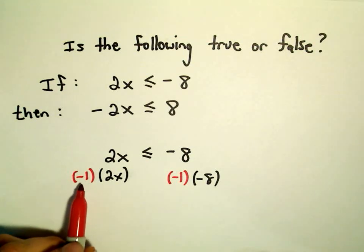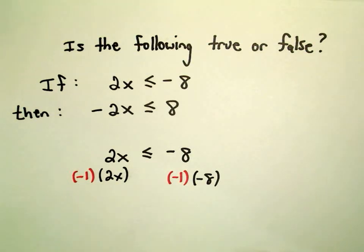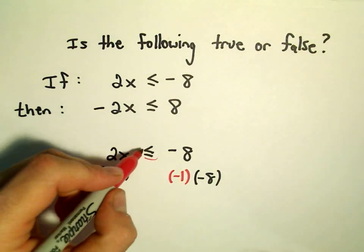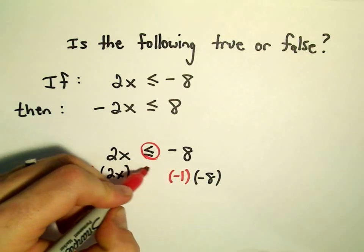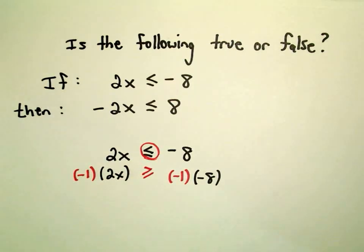If you multiply or divide by a negative number, which we did in this case, remember that the inequality flips directions. So instead of being less than or equal to, it becomes greater than or equal to.